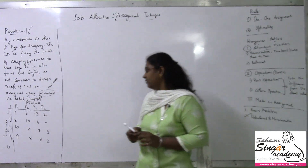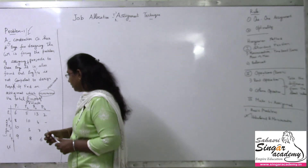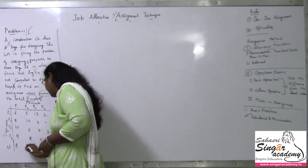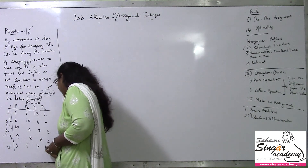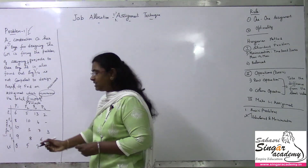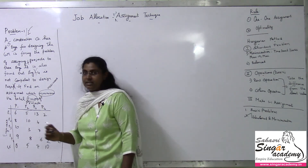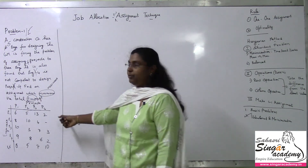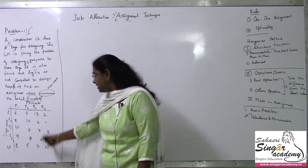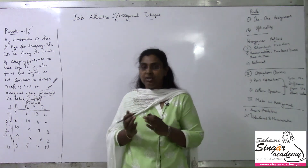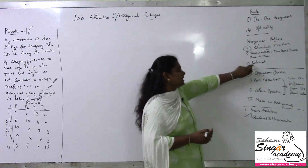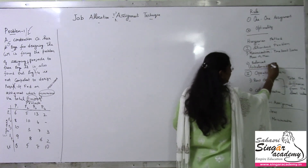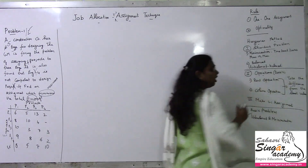Now let us check if it is balanced. We have 5 engineers but only 4 projects, so it is not balanced. For a balanced problem, the number of engineers must equal the number of projects. Since we have 5 engineers and 4 projects, it is an unbalanced problem. I have to make it balanced.